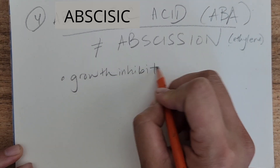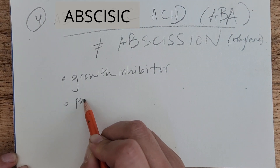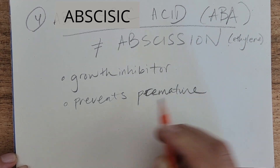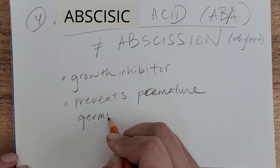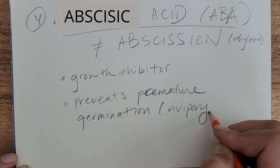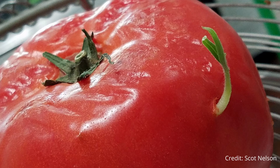ABA is higher in early seed development and prevents premature germination. You don't want seeds germinating inside the fruit before it's dispersed. There's a condition called vivipary where seeds start germinating inside — you don't want that, because you want the fruit to move away from the main plant, get dispersed, and be in the right conditions before germinating. Otherwise, the seeds will probably just die.